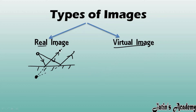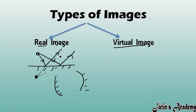Now you may ask in which cases real images are formed. You will study that in class 8, about concave and convex mirrors. In the case of concave and convex mirrors, images are also going to form in the real world, and those images are known as real images. But in this class, you will only make virtual images — this diagram is what you have to learn.